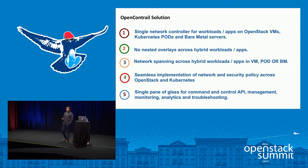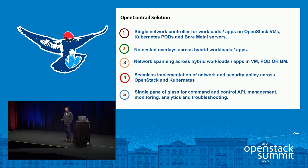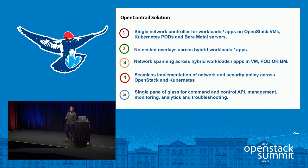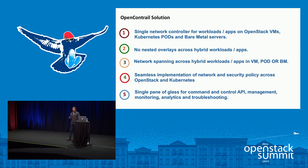Another benefit is that you can actually create a network which can span across Kubernetes, OpenStack, and bare metal. So you can have a virtual network where a pod, a virtual machine from OpenStack, and a bare metal server are all talking to each other as if they belong to one single network domain. Because of this seamless implementation with OpenContrail, you are able to provide better security policies and control how your apps talk to each other. The single pane of glass gives you better command control, better API, and also helps you provide monitoring and analytics to troubleshoot this complex hybrid workload environment.